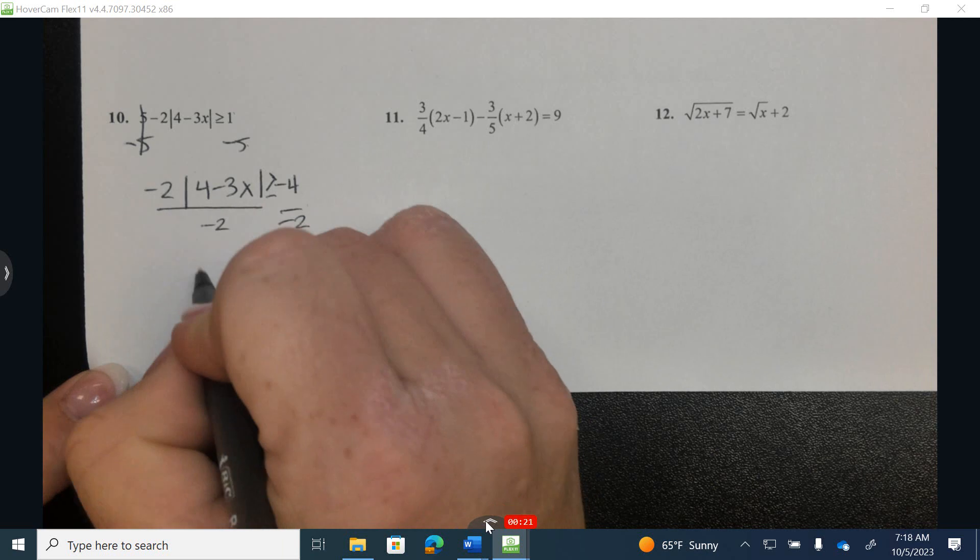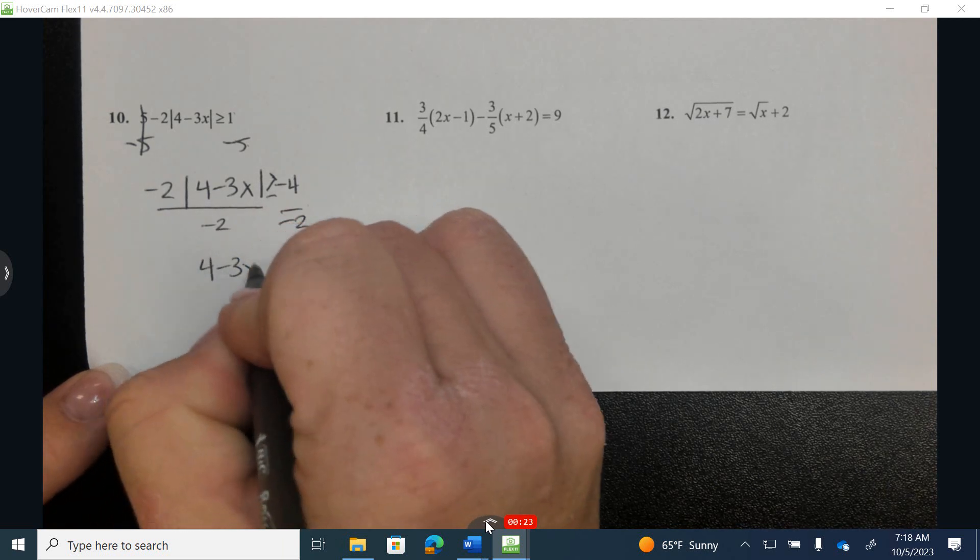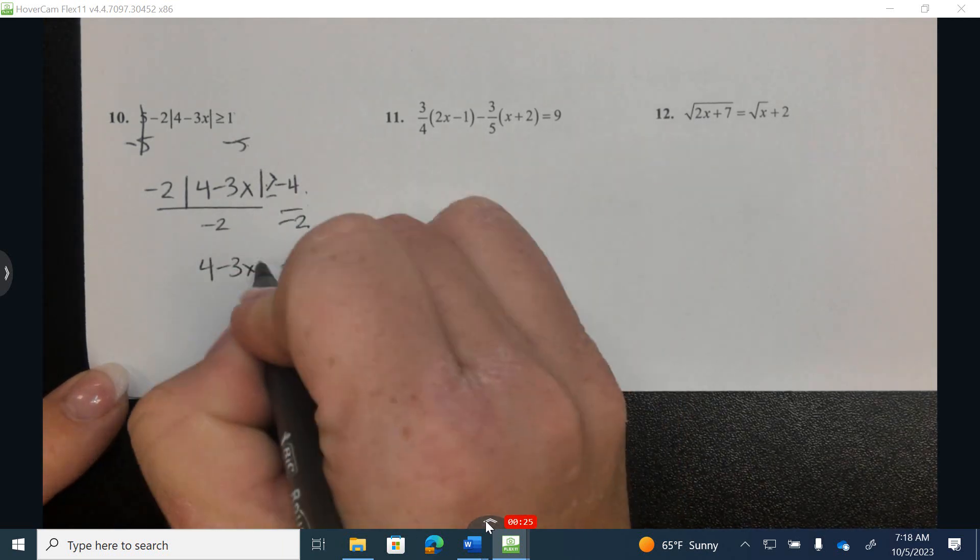Now I'm dividing by the negatives, and when I divide, I'm going to flip the symbol.